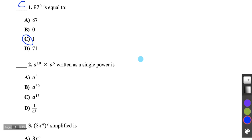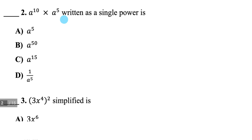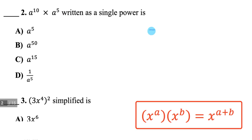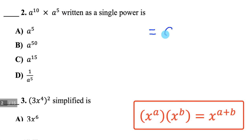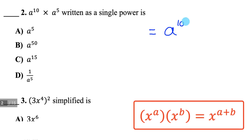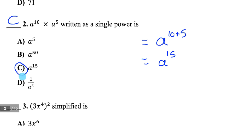Question 2: a to the power of 10 times a to the power of 5, written as a single power. When multiplying powers with the same base, you keep the base and add the exponents. So we get a to the power of 10 plus 5, which is a to the 15, and I see that as an option — C.